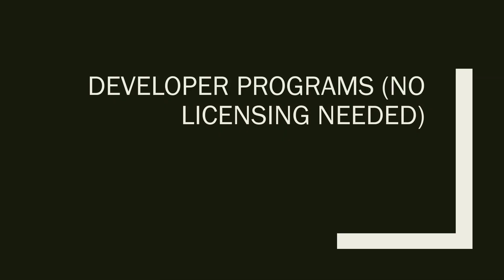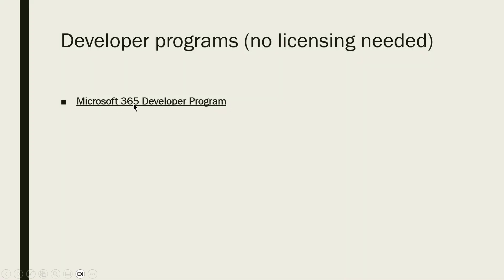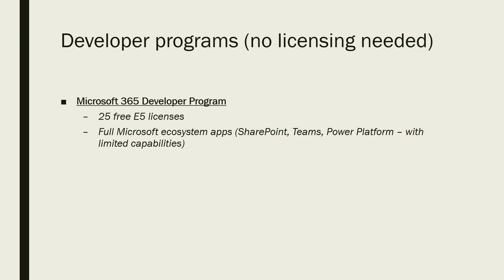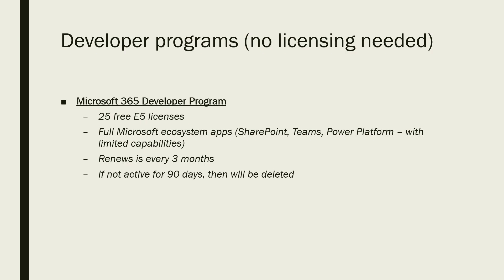Now let's look at developer programs — no licensing needed, 100% free. First is the Microsoft 365 Developer Program. It comes with 25 free E5 licenses and gives access to the full Microsoft ecosystem including SharePoint, Teams, and Power Platform with limited capabilities. It renews every 3 months, but if your environment is inactive for 90 days it will be deleted — though you will receive email warnings and can reactivate by making changes.